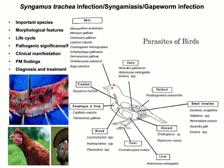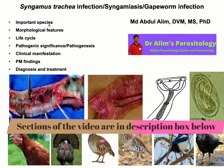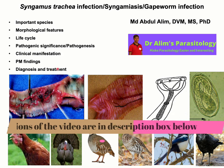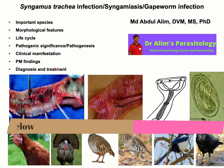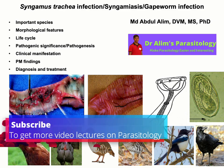In this video lecture, I'm going to talk about one of the important helminthiases of birds, which is Syngamus trachea. Throughout this video I'll discuss the important species, morphological features, lifecycle, pathogenic significance, pathogenesis, clinical manifestation, post-mortem findings, and finally diagnosis and treatment of Syngamus trachea infection, or Syngamiasis, or gapeworm infection in different domestic and wild birds.